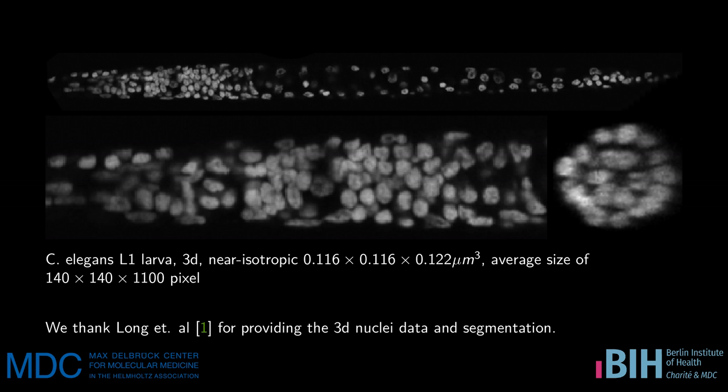We are working on biomedical microscopy data. Here is an example volume from this project — it shows the C. elegans worm at the L1 larval stage. The data is 3D and has near-isotropic resolution. Especially towards the front of the worm in the nervous system, the nuclei are especially densely packed and hard to segment even by hand. We want to thank Long et al. for providing the data and the manual segmentation.